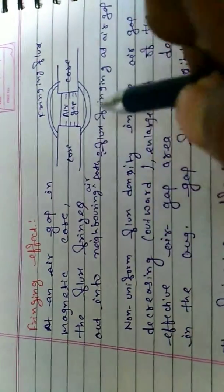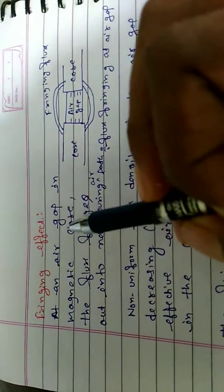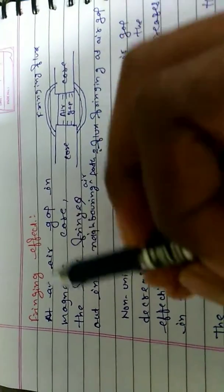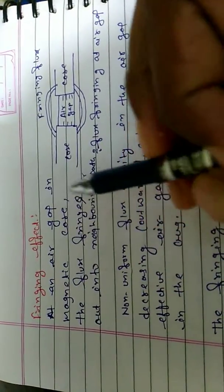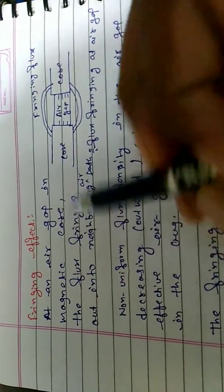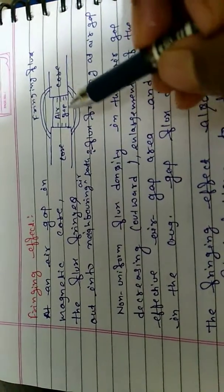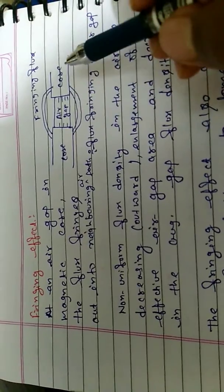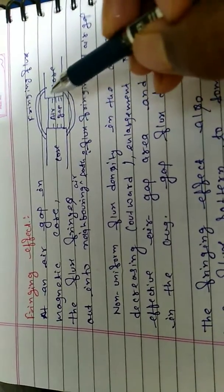Fringing Effect. What is the fringing effect? At an air gap in a magnetic core — this is our magnetic core, and this is the air gap.